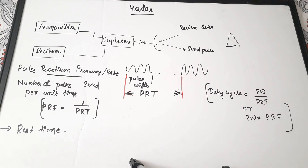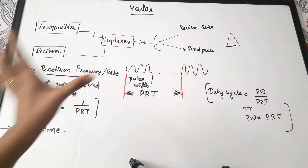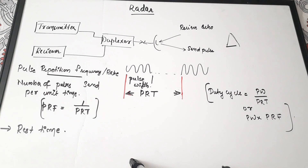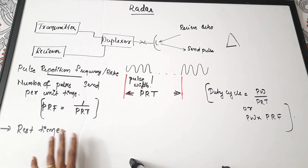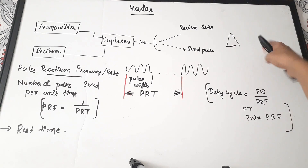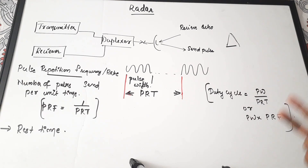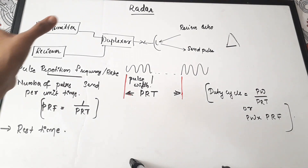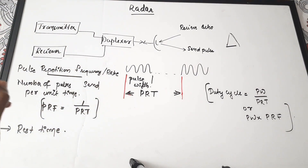Today's topic for discussion is radar. We are going to see all basic terms and equations related with radar and all the important concepts. Radar is a device which is used for detecting the presence of some target or object in a distant location, and it is used in navigation systems.